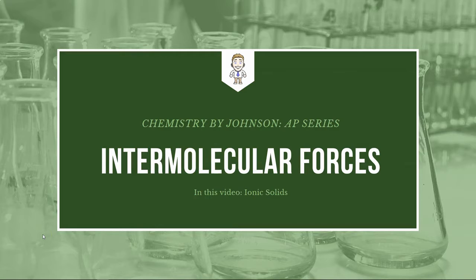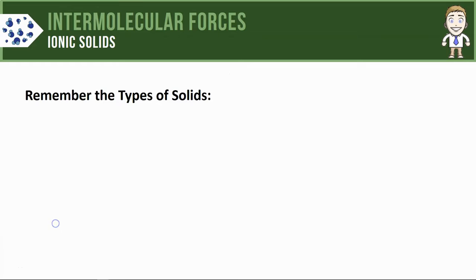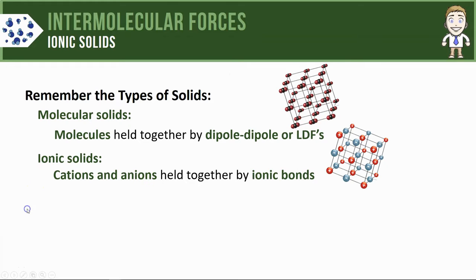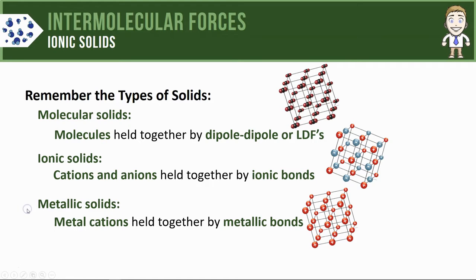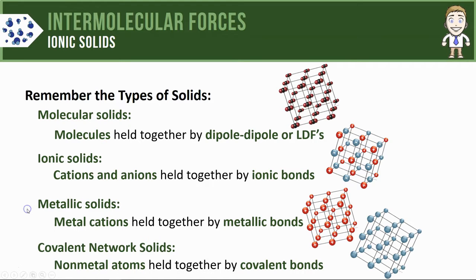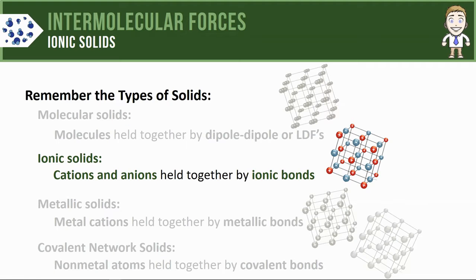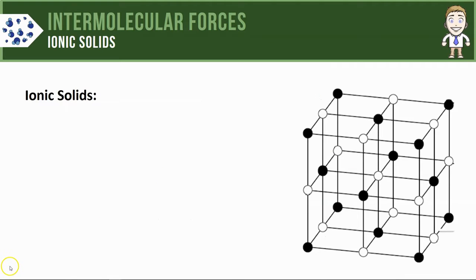Hey everyone, in this AP Chem series video we're going to take a look at ionic solids. Remember that we've already seen several different types of solids like molecular, ionic, metallic, and covalent network, and in this video we'll just take a closer look at one of those called ionic solids.